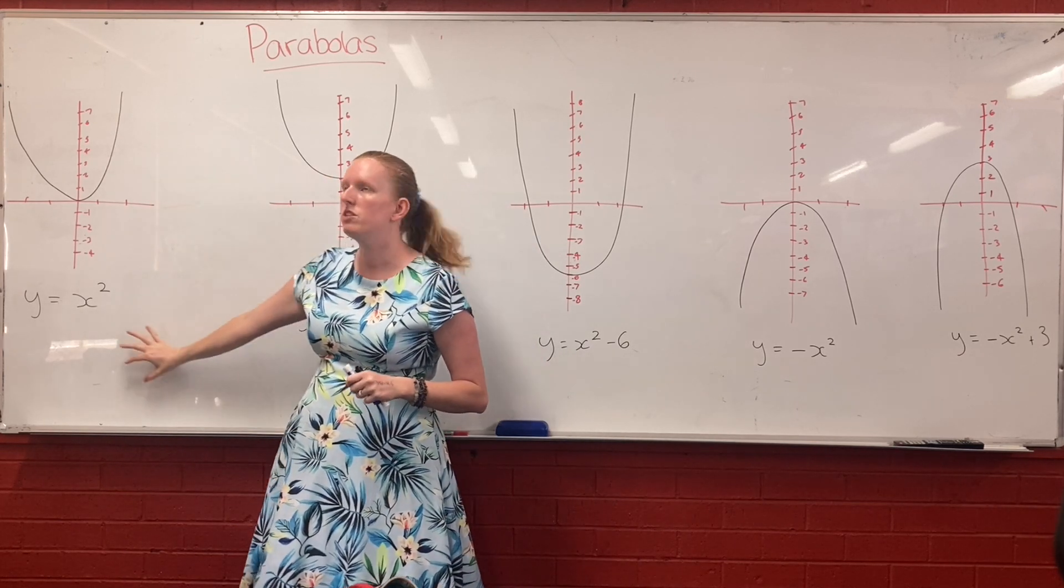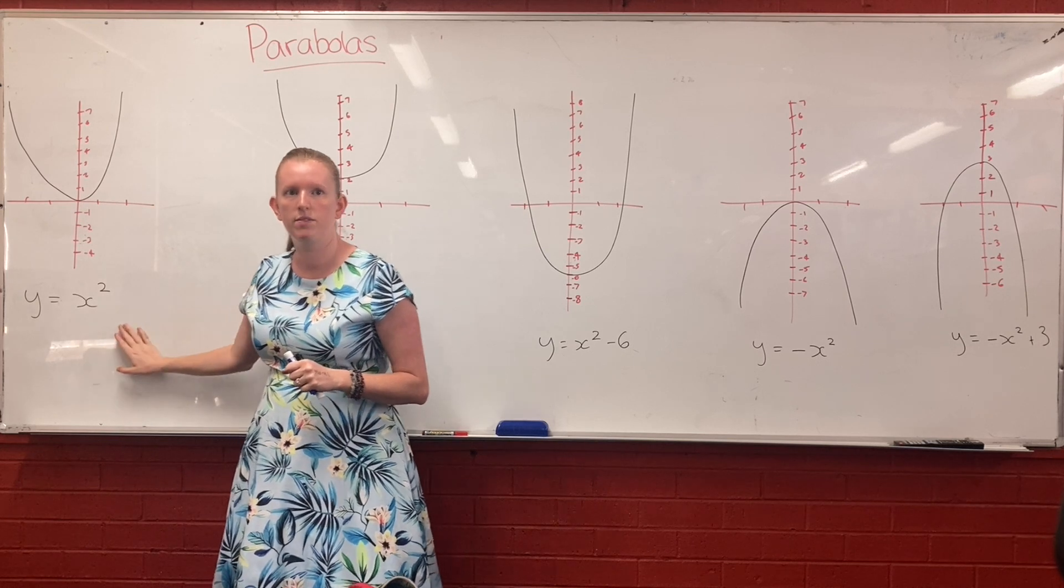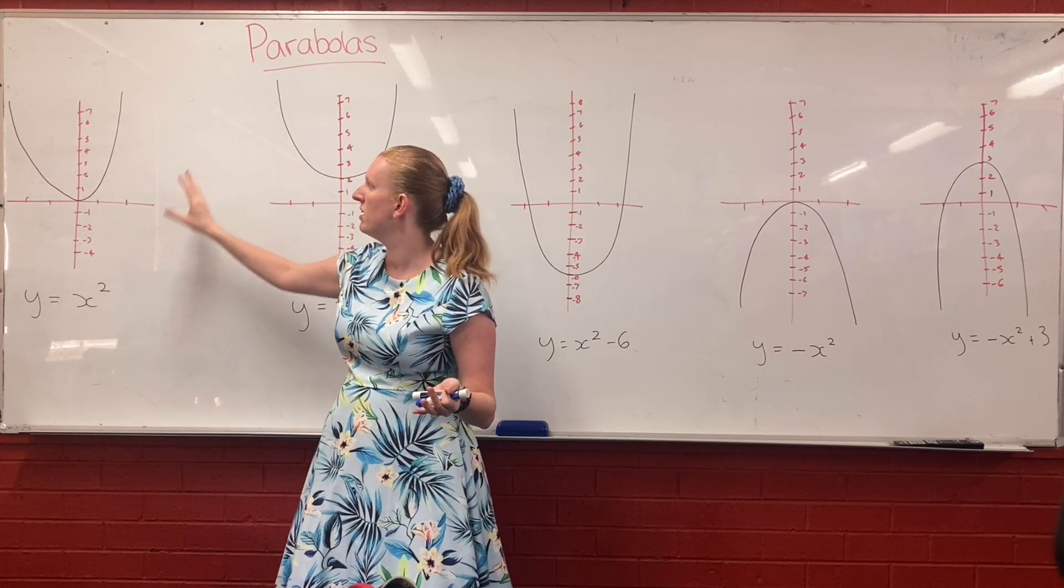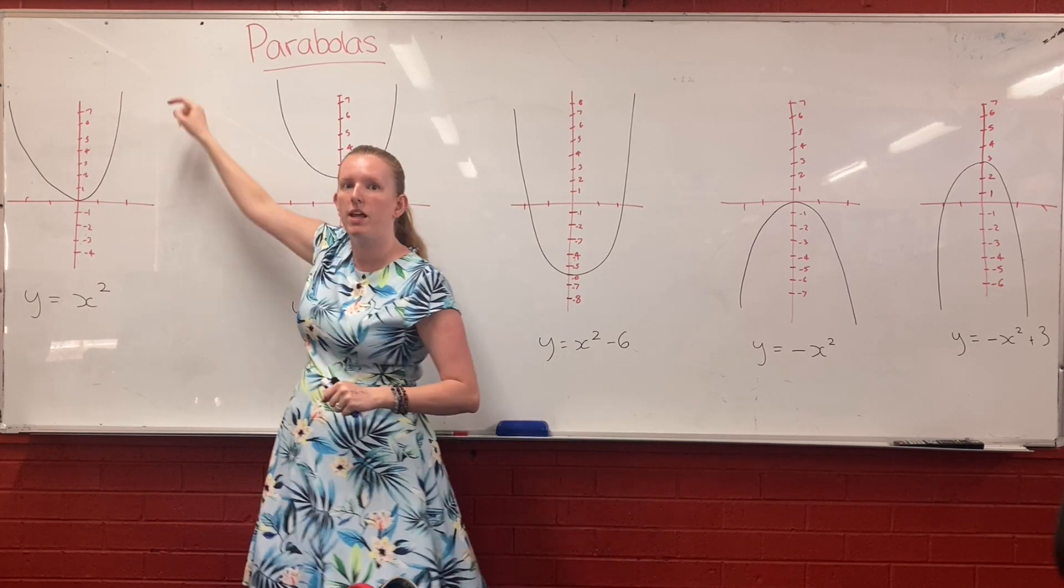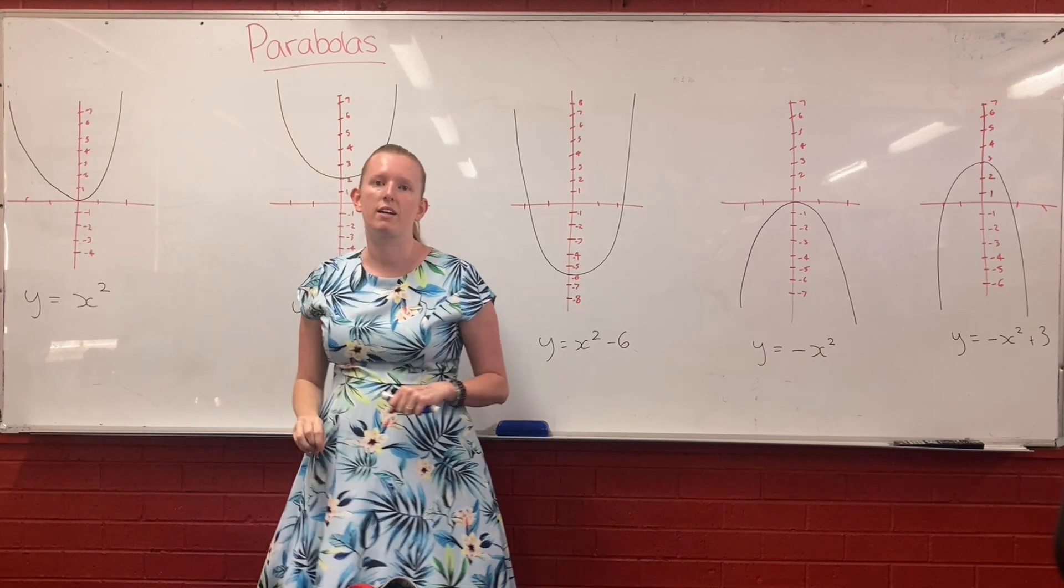So the equation for a parabola is y equals x squared. For a plain old parabola, this is what they look like, it comes down, touches at the origin, and then goes back up.